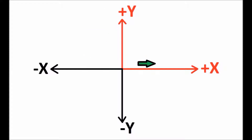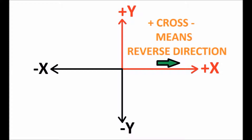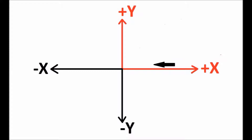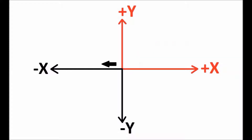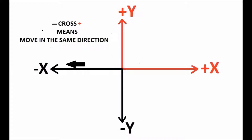When moving in the positive direction crossed with negative means reverse the direction, resulting in negative. Therefore, plus cross minus is equal to minus. When moving in the negative direction crossed with positive means move in the same direction, resulting in the negative direction.